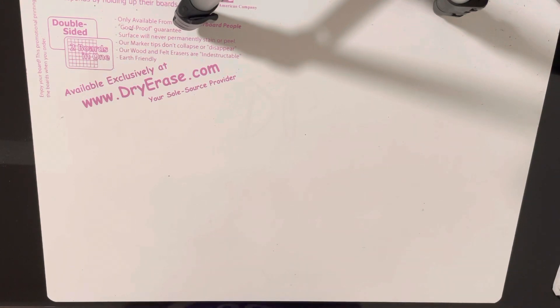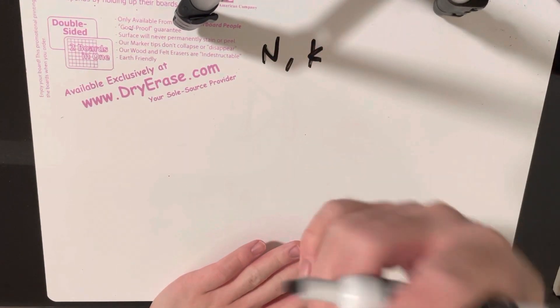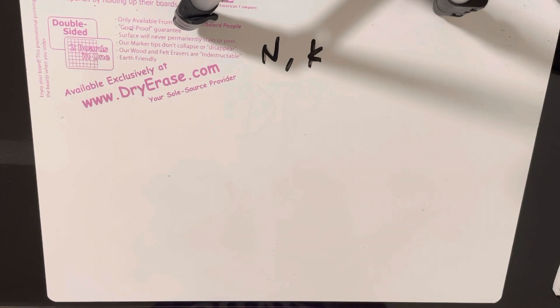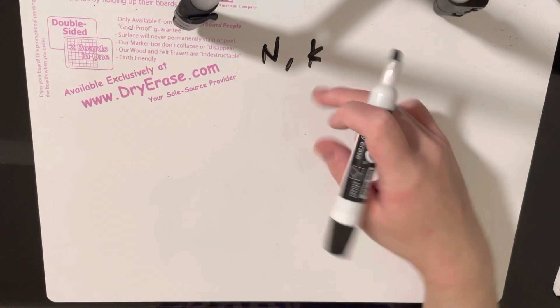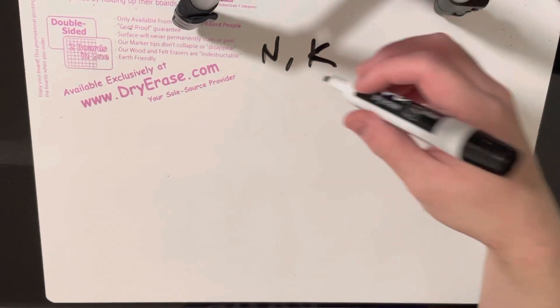So the first thing you notice about this problem is that basically you're given two numbers where n is the length of the array, k is at least how many indices have to equal to the value, and you have the array itself.